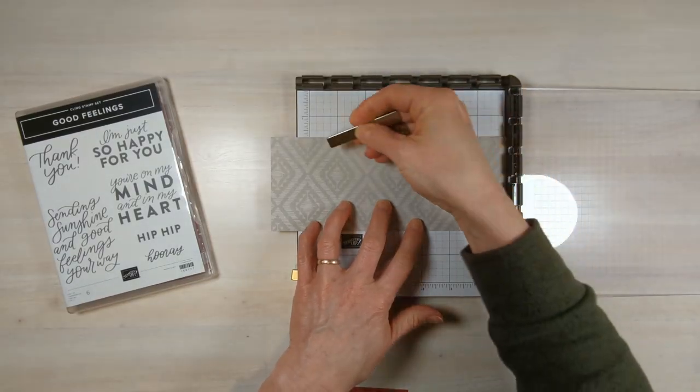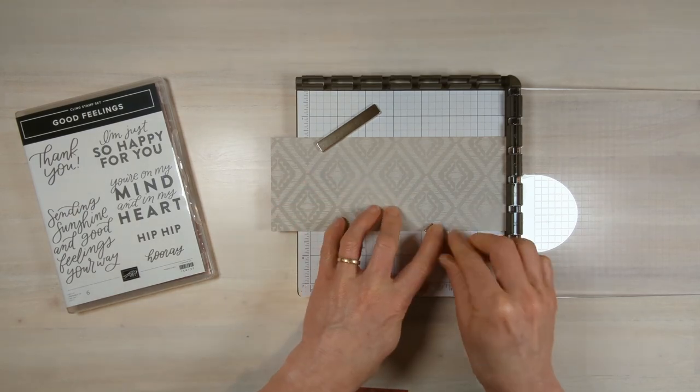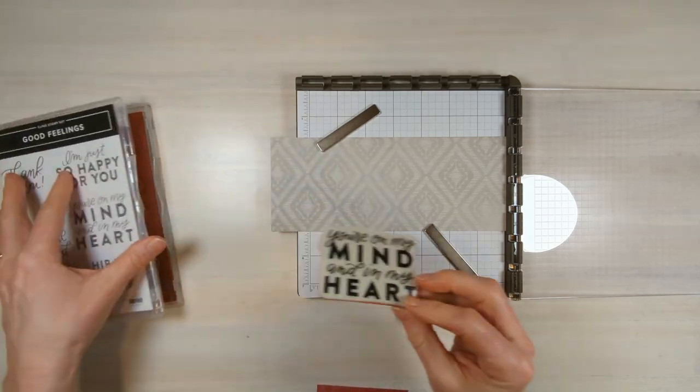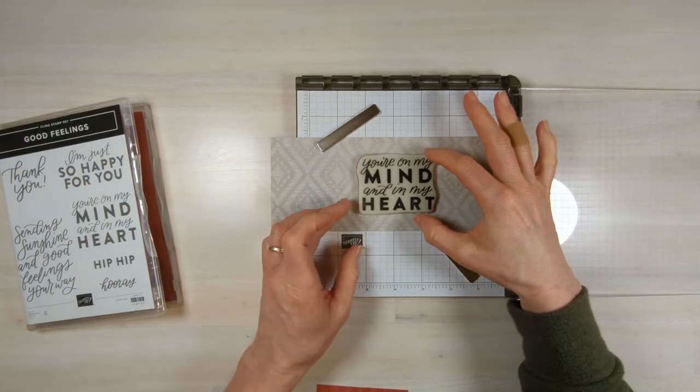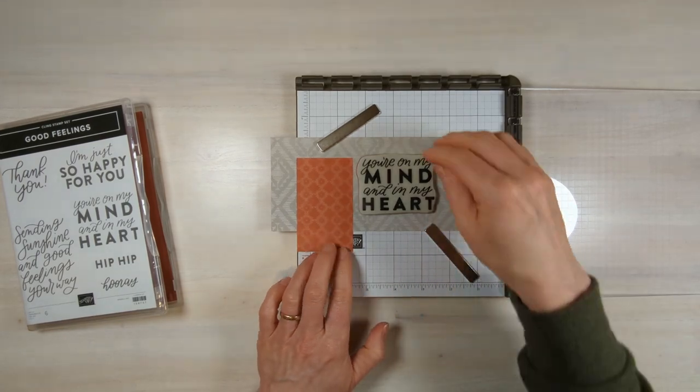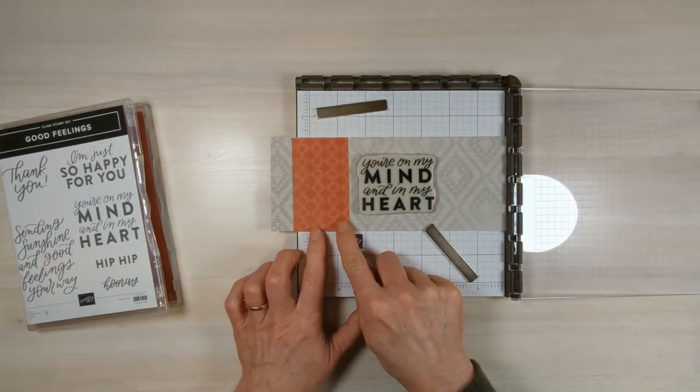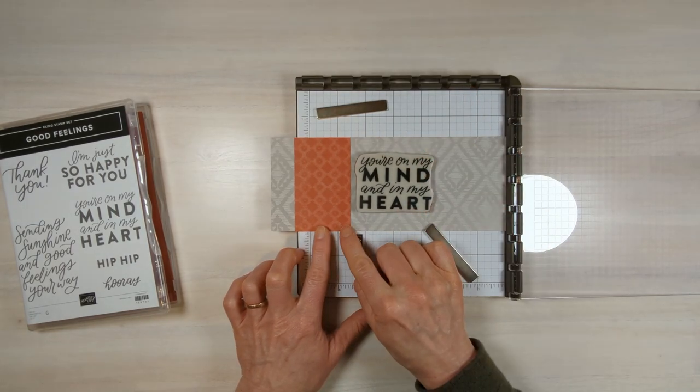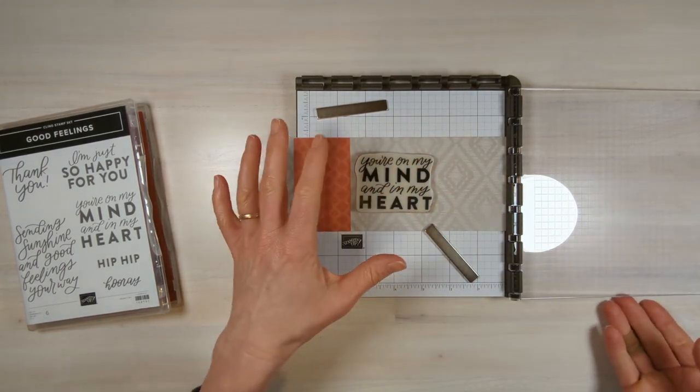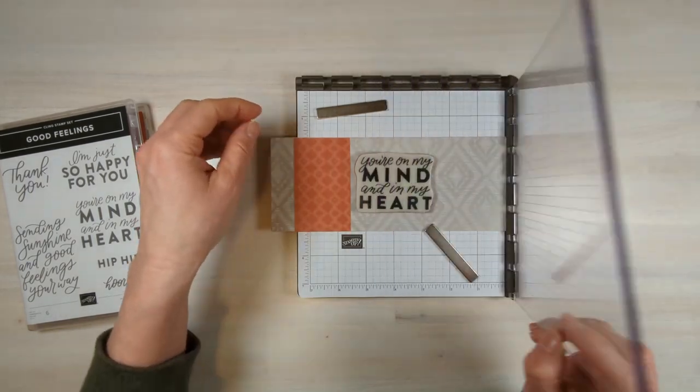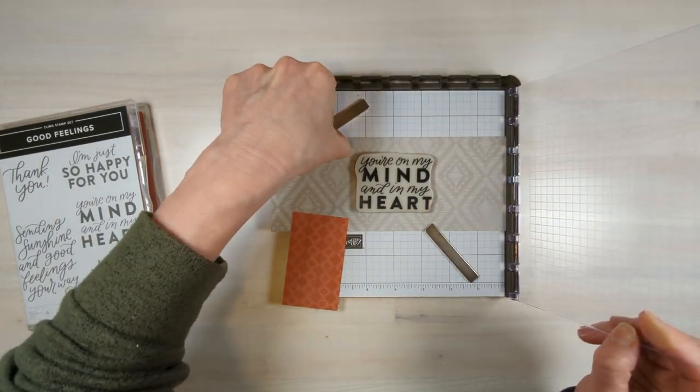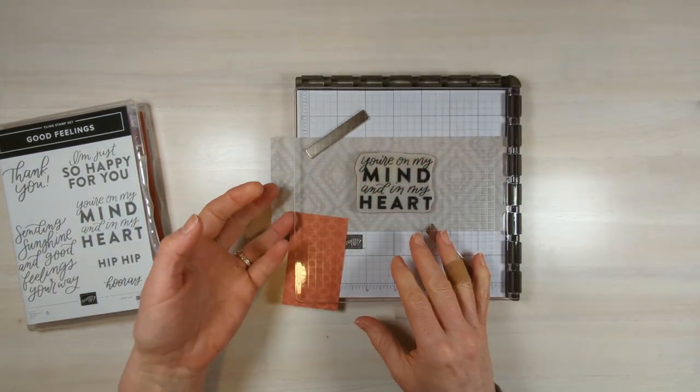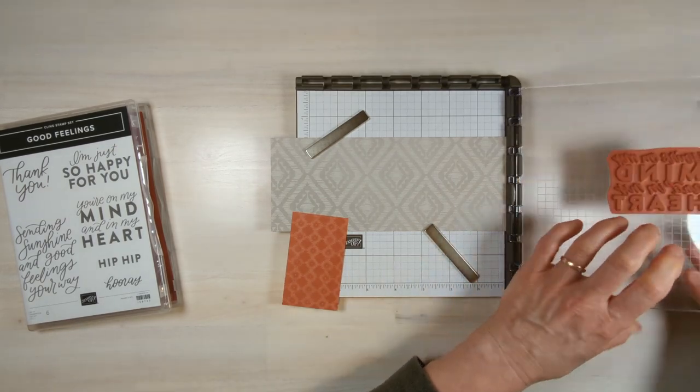Because we're going to be stamping our sentiment directly on this Designer Series paper, I'm going to use my Stamparatus so that I can re-stamp the image multiple times if needed to make sure it gets a nice black, dark image. I'm kind of lining up where am I going to have this Designer Series paper on my front and where do I want my image. This will be different however you, whatever sentiment you use and where you want yours lined up. I think that's where I want. I'm going to move the magnet over my paper to hold that down and then press. This is the best way to line it up.